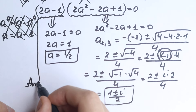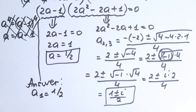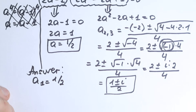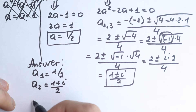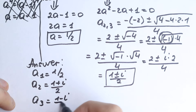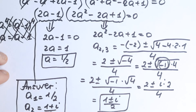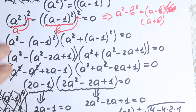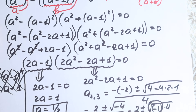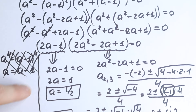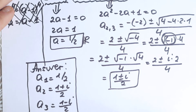So we've found all solutions to this equation. Our answers are: a-one equals one-half — which is the obvious root many students see — plus a-two equals one plus i over two, and a-three equals one minus i over two. Three roots in total, solved completely and without mistakes. The method used was the difference of squares identity, bringing everything to the left, forming a product, then simplifying step by step — giving one real root and two complex roots.